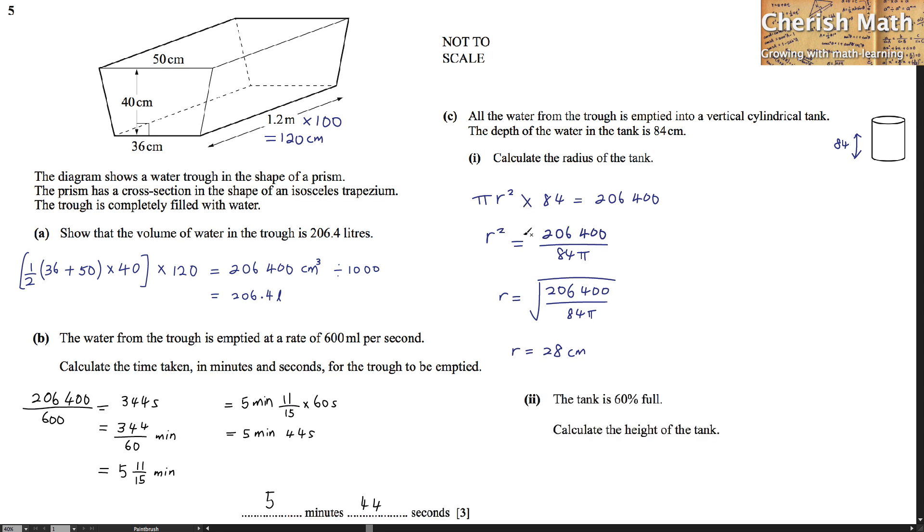Part C2. The tank is 60% full. Calculate the height of the tank. Now, 60% stands for the height of 84 cm. That means, if let's say 100% full, that will be the height that I represented on the page.